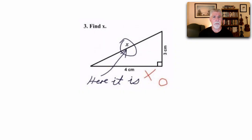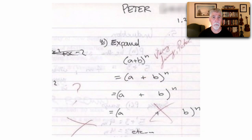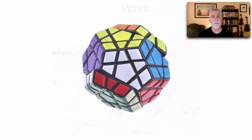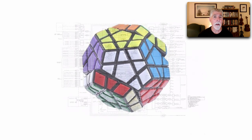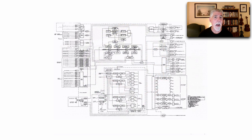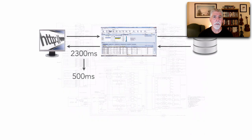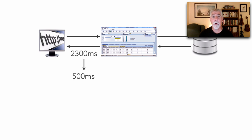We've been problem solvers all our lives. In grade school we had to locate missing variables or expand polynomials when math got harder. Sometimes we solve puzzles for fun, but we're definitely problem solvers at work — finding a solution for a five-nines architecture style, or determining how to increase responsiveness from 2300 milliseconds to 500, which is a very challenging problem.